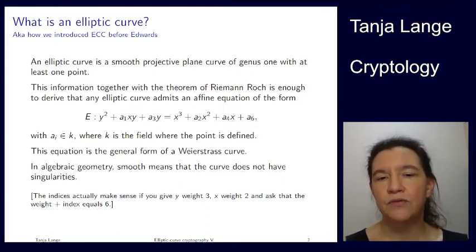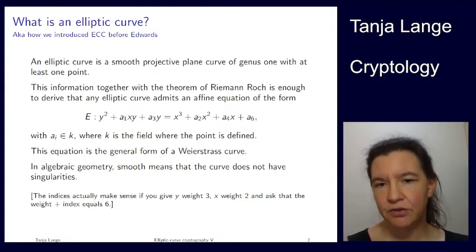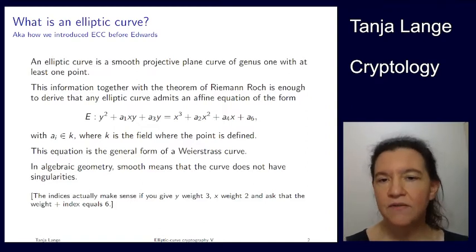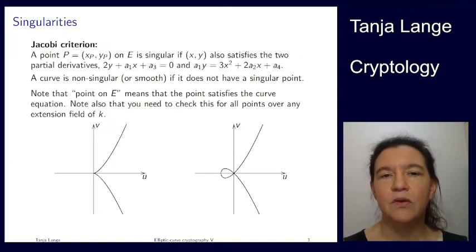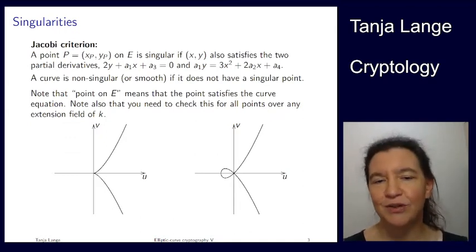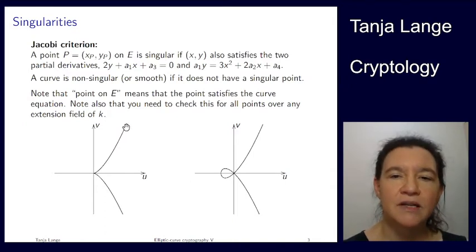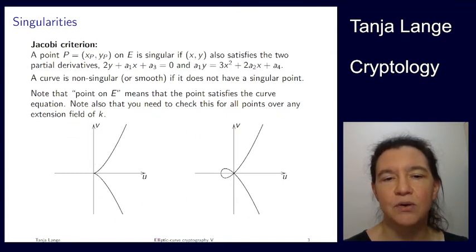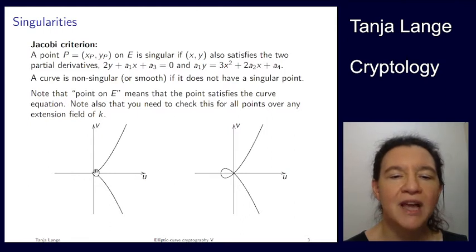But not everything of this curve shape is an elliptic curve. That's a little bit like for Edwards curves, we had to say that d is not 0 and d is not 1. So we have to do some exceptions to deal with this smooth part. So smooth means that the curve doesn't have singularities. And this curve shape is called a Weierstrass curve.